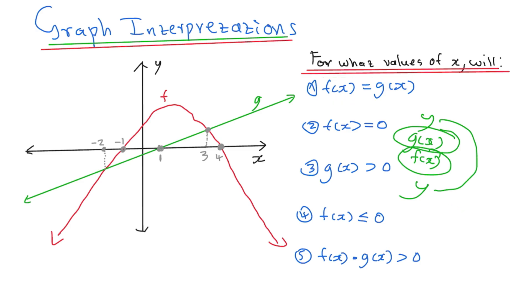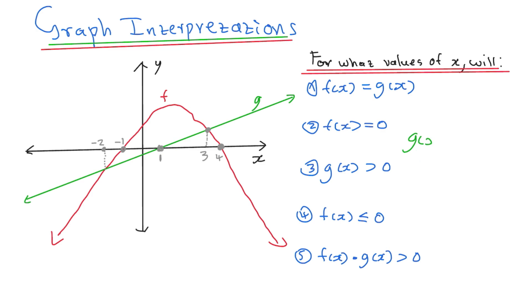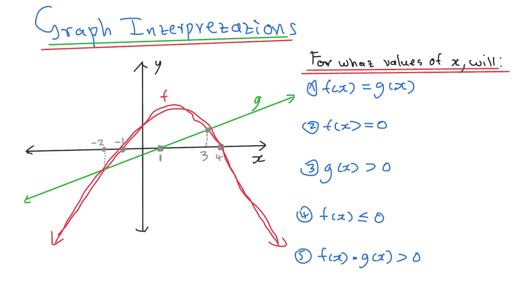Two functions are equal when they cut each other or when they intersect each other. So you can see here, our red graph which is f will cut our g on this point and this point. That's where the graphs are going to be equal to each other. But remember, they asked for what values of x. So on this point, our x value is 3, and on this point, our x value is negative 2.